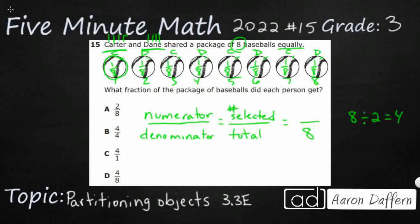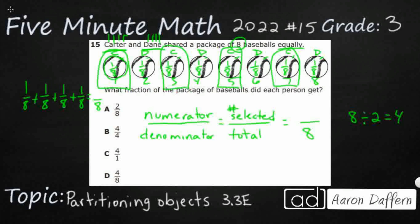So what we can use is a little bit of addition. Remember when we add or subtract fractions we need to have a common denominator — the denominator we've been dealing with is still going to be eight. So for Carter I've got four of them: one-eighth plus one-eighth plus one-eighth plus one-eighth. He gets half and Dane gets the other half. Here's the key thing with fractions: you need to have a common denominator but you don't add the denominators. As long as everything is eight, you add the numerators. One plus one plus one plus one makes four. So each of the boys got four-eighths of the baseballs, which is equal to one-half. And four-eighths plus four-eighths equals the whole thing — eight-eighths. So my answer here is D.